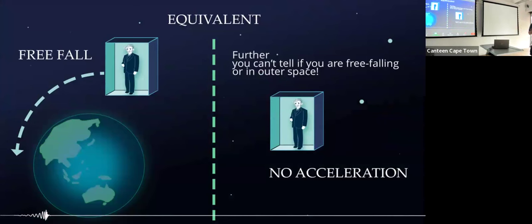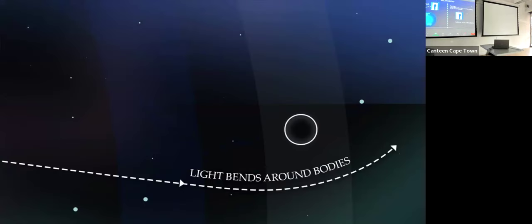Einstein also realized that if you're in an elevator free-falling in outer space in a gravitational field, or if you were not accelerating at all, and you were blindfolded in a windowless elevator, you wouldn't be able to tell the difference. If you were shining a light against a mirror with the light bouncing to and fro, here it wouldn't move, but in a gravitational field it must fall — and so he realized that light must be affected by gravity.